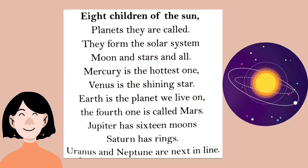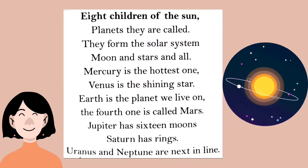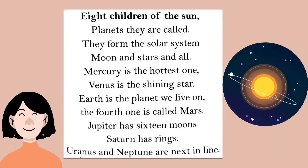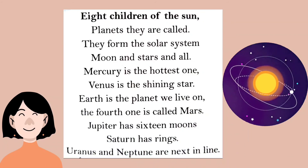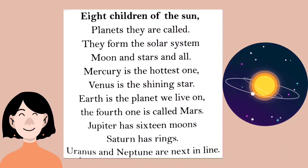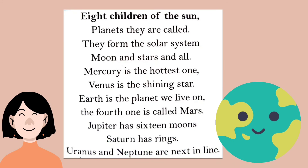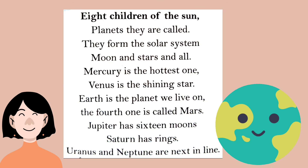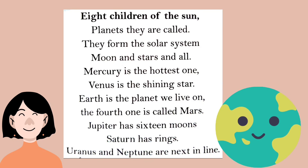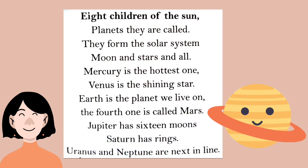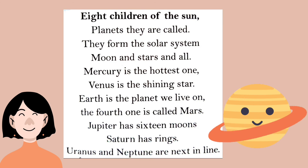Eight children of the sun, planets they are called. They form the solar system. Moon and stars. Mercury is the hottest one. Venus is the shining star. Earth is the planet we live on. The fourth one is called Mars. Jupiter has sixteen moons. Saturn has rings. Uranus and Neptune are next in line.